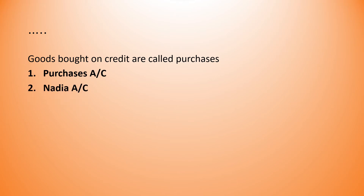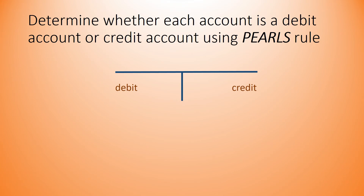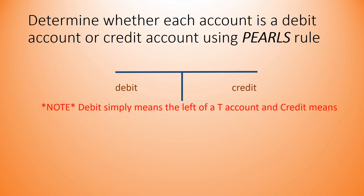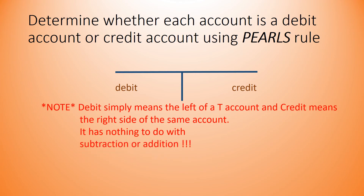Now we are going to determine the nature of each account — that is, whether it's a debit or credit account — by applying the PROLs rule. Accounts can be represented in T-account format as shown. Debit simply means the left side of a T-account and credit means the right side of the same account. It has nothing to do with the addition or subtraction of anything. Here's how you apply the PROLs rule.